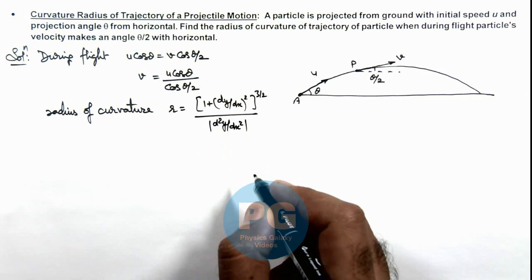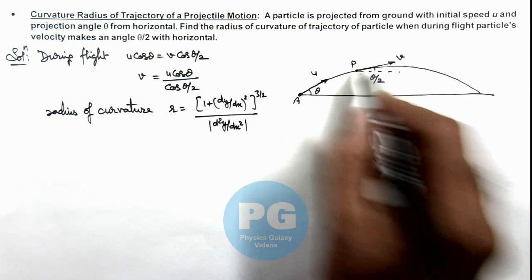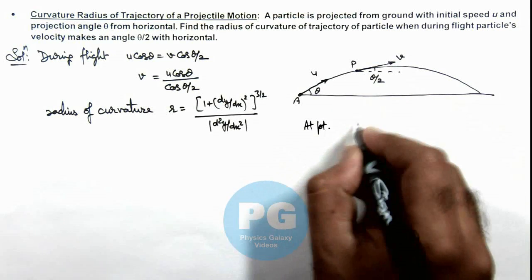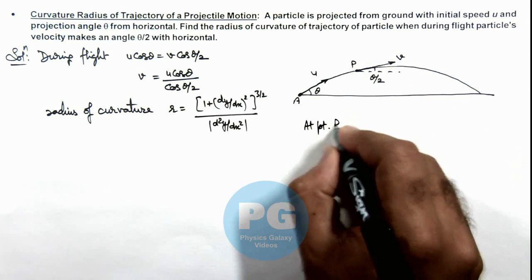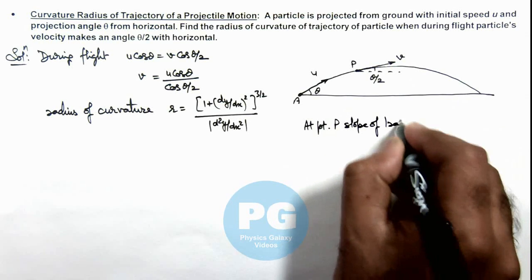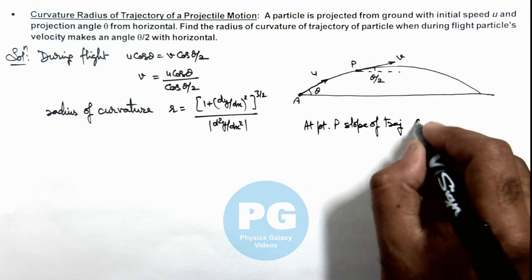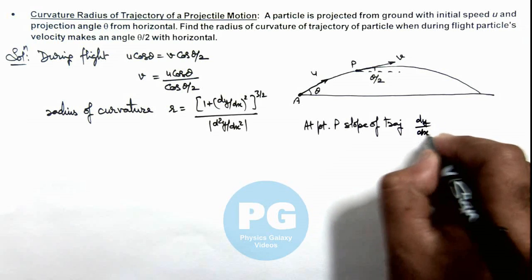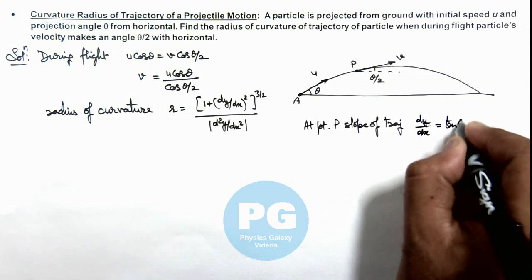And at this point P we can write the slope at point P, slope of trajectory can be given as dy/dx which is equal to tan θ/2.